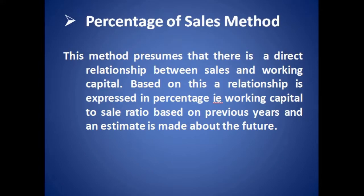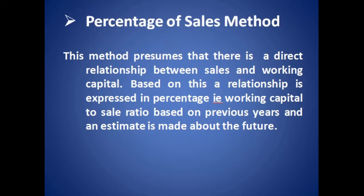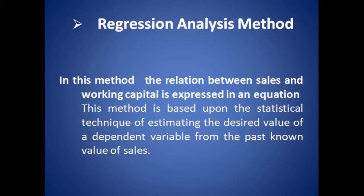In the percentage of sales method, we presume that there is a direct relationship between sales and working capital. Based on this, a relationship is expressed in percentage — that is, the working capital to sales ratio — based on previous years, and an estimate is made about the future. Just like in ratio analysis, where we decide the relationship between two variables, in this method a relationship between working capital and sales is established and forms a basis for projecting future working capital requirements.